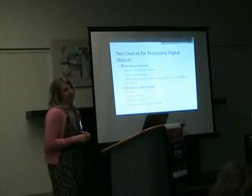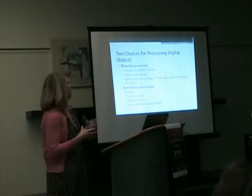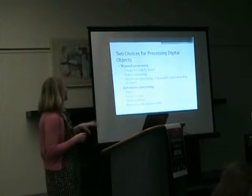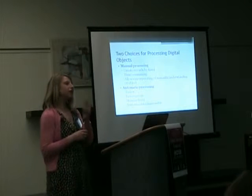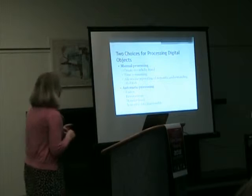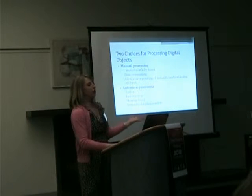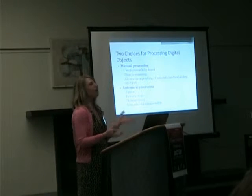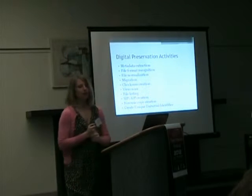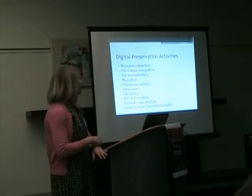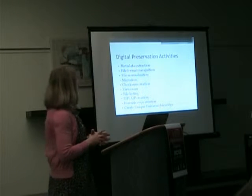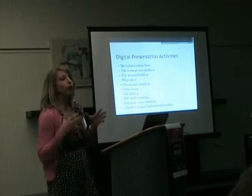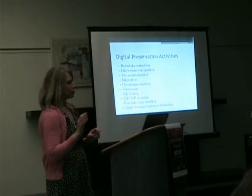The other choice is automatic processing. And as you can imagine, something that's automatic could be faster — there's probably fewer errors, it would be done in a standardized way. But one of the difficulties is that semantic data, the descriptive data about the electronic record, is much harder to get automatically. So there's actually a third choice: a combination of both manual and automatic, which is probably what most people use. But in terms of automatic processing activities, there are a lot of open source tools that exist, and a lot of digital preservation activities you have to do with an electronic record that open source tools could help you with.